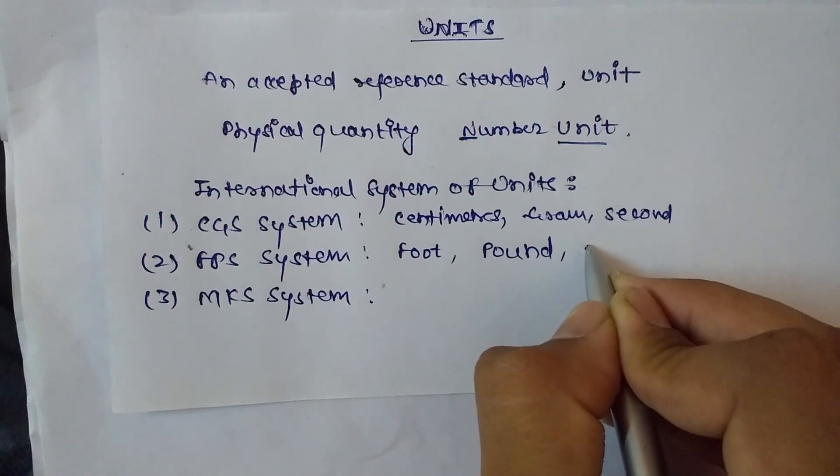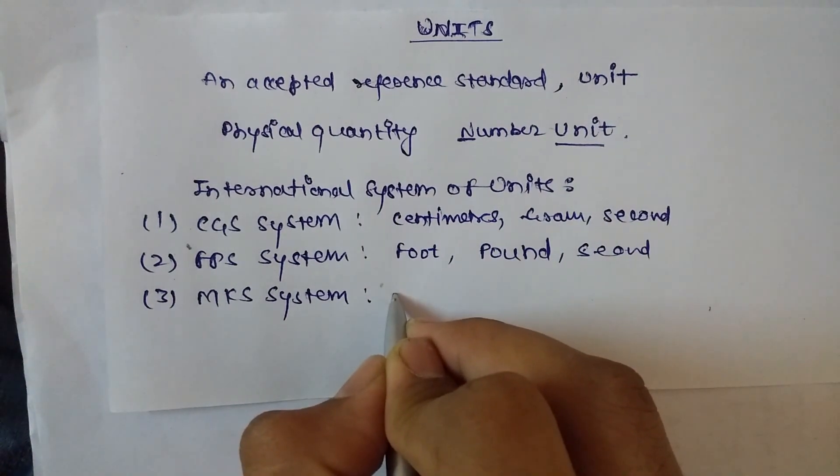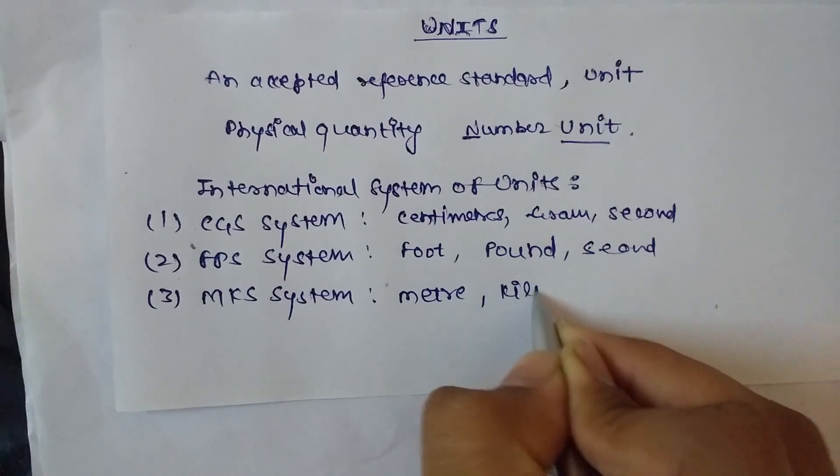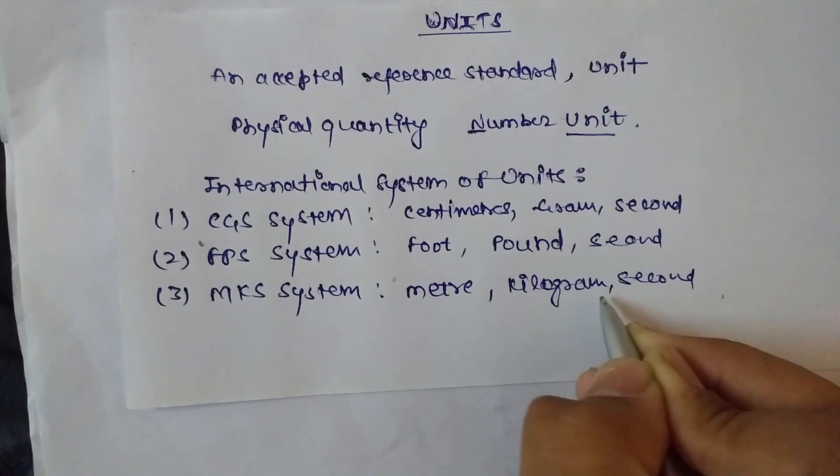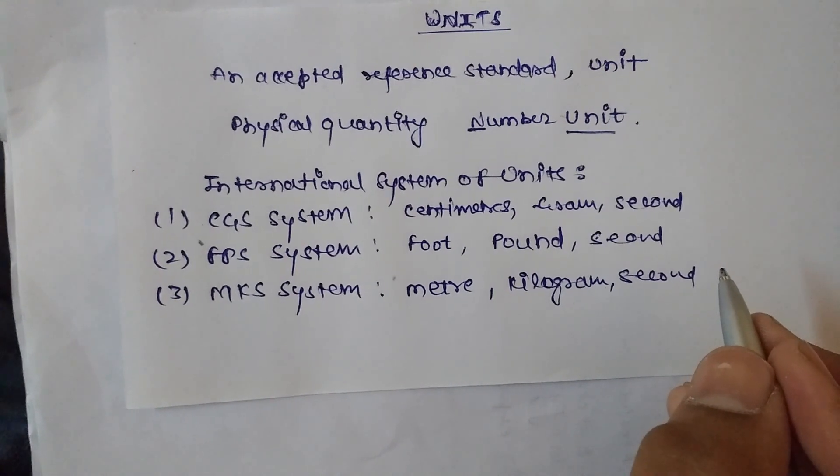In MKS system, length is meters, mass is kilogram, and time is second respectively. Second is the same in all three international systems of units.